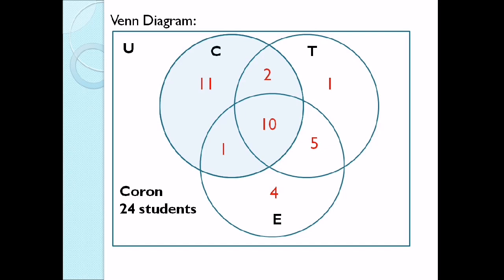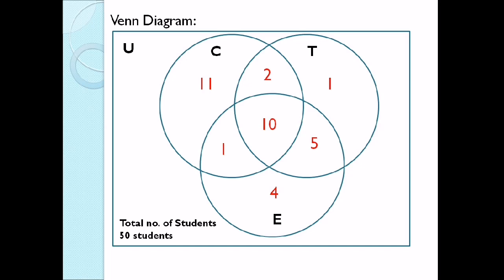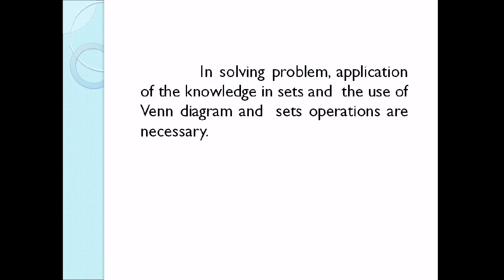And then lastly, we have a total of 50 students. We just add 11 plus 2 plus 1 plus 1 plus 10 plus 5 plus 4. I-add natin lahat ng numbers na nasa loob ng circles — yung pumili ng Coron, Tubbataha, at El Nido, or yung dalawa, or yung lahat. So which is 34. And then we subtract it from 50, so that is 16. Yung ilalagay natin sa labas ng circle, doon sa may rectangle, sa universal set — so that is neither. Ibig sabihin walang napili doon sa tatlong nabanggit. So that's how we solve problems involving sets.